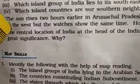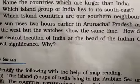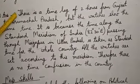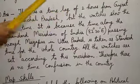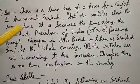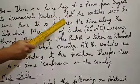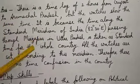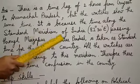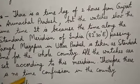Question number three: The sun rises two hours earlier in Arunachal Pradesh as compared to Gujarat. There is a time difference or lag of two hours from Gujarat to Arunachal Pradesh, because of the difference of 30 degrees. But the watches show the same time because the time along the standard meridian of India — that is 82 degrees 30 minutes east, passing through Mirzapur in Uttar Pradesh — is taken as standard time for the whole country. All watches are set according to this meridian passing through Mirzapur, Uttar Pradesh. Therefore there is no time confusion in the country.